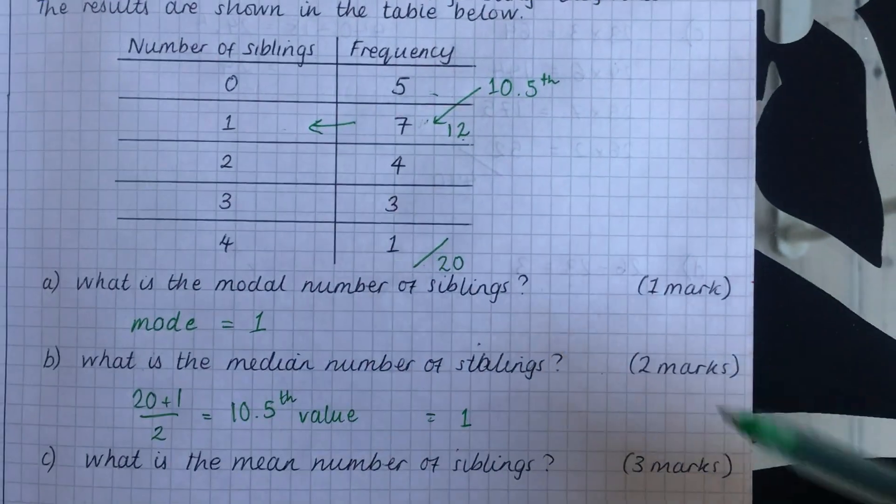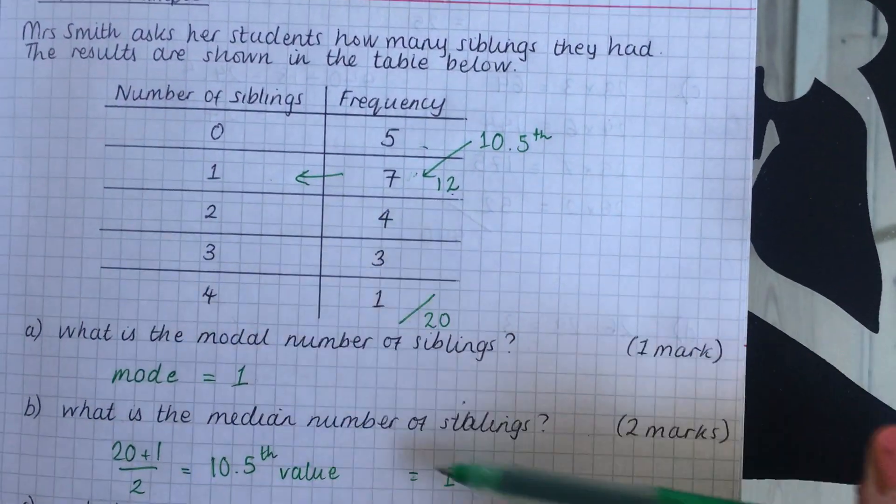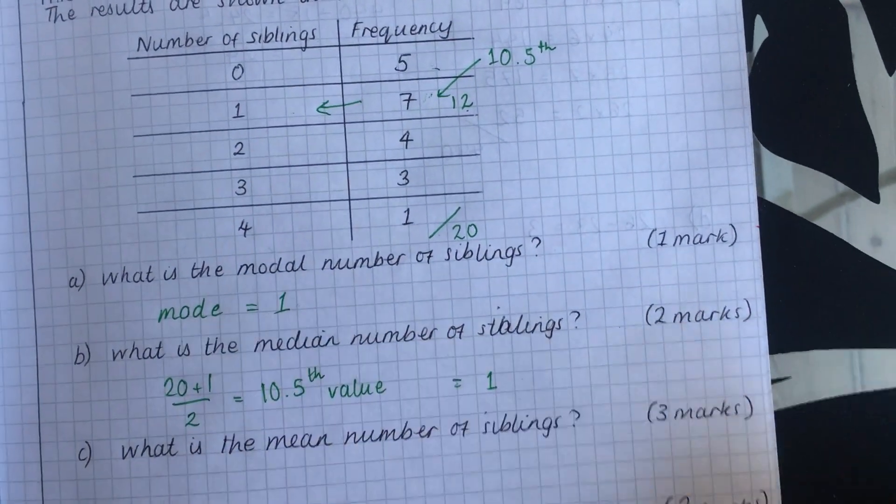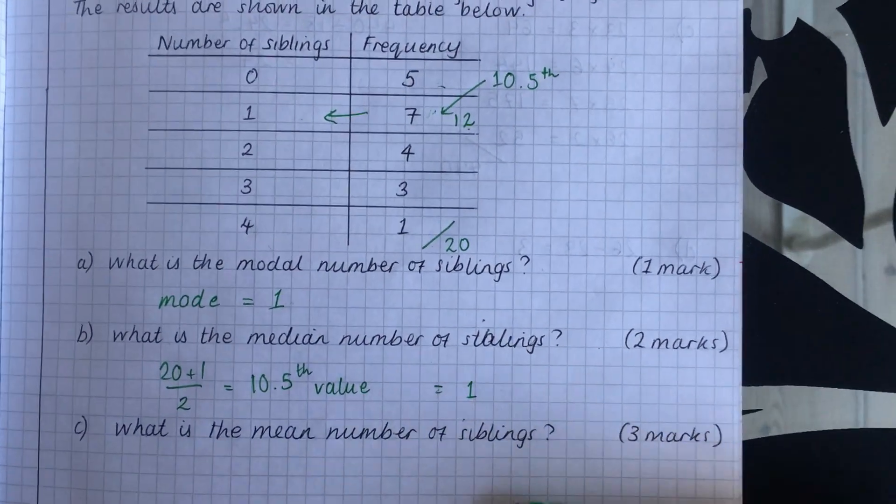Don't forget one is the median. So the answer here is one. Now, don't forget what I said in the last lesson that your averages should roughly be about the same. So that's a good indication that you've done it right. Now the mean.